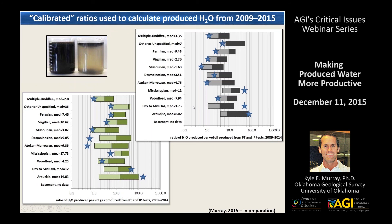In recent weeks I've tried to refine this methodology and calibrate produced water estimates to the saltwater disposal volumes I've been tabulating over the same period. The stars on the slides represent the ratios that give the best fit to the saltwater disposal volumes. After calibration, the ratio of water to oil in the Mississippian appears to be much higher. The ratio of water to gas in the Devonian to Middle Ordovician — which includes the Hunton — and even water to oil in that zone is also much higher. This tells me that produced water volumes will be much higher in areas producing from the Mississippian and the Devonian to Middle Ordovician.